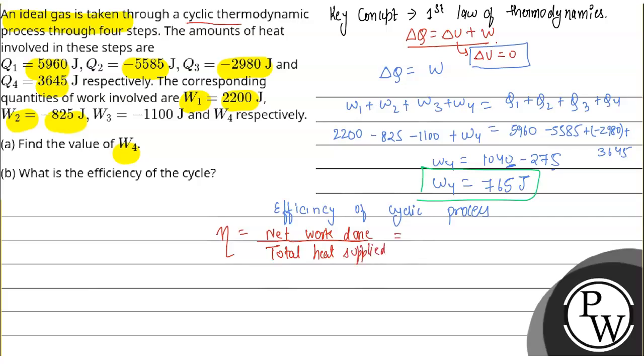Here you can see which heat values are positive—that is the heat supplied. Q1 and Q4 are positive, so Q1 and Q4 are heat supplied.